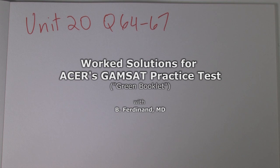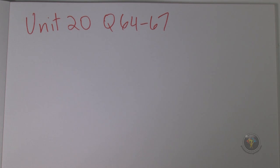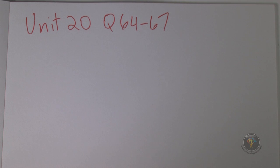Unit number 20, questions 64 to 67. Just glancing through it, underlining a few things — each factor, actually cofactors. First question, 64: which one of the following is a precursor — and it even defines a precursor — a substance that is converted to Factor 5.